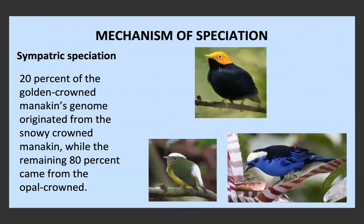An example of this is the golden-crowned manakin, which has 20% of its genome coming from the snow-capped manakin and the remaining 80% from the opal-crowned manakin — these would be the parents. The golden-crowned manakin was originally formed from crossbreeding between these two species; however, neither of the parent species can interbreed with each other anymore, but the golden-crowned manakins can interbreed within themselves and produce fertile offspring, which means we call it a new species formed through sympatric speciation because there's been no geographic isolation.